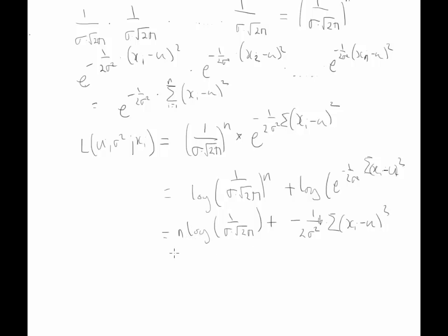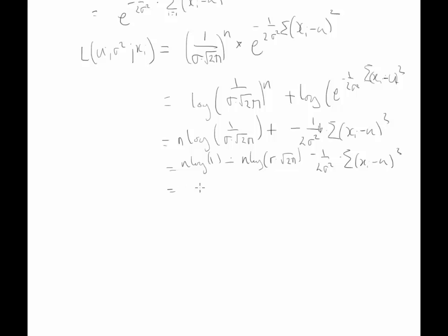We can still simplify this a bit further, so we have n log 1 minus n log of sigma square root 2 pi minus 1 over 2 sigma squared times the sum of xi minus mu squared. We know that the log of 1 is 0, so this is just 0. So our likelihood estimation is just minus n log standard deviation times square root 2 pi minus 1 over 2 sigma squared times the sum of xi minus mu squared.